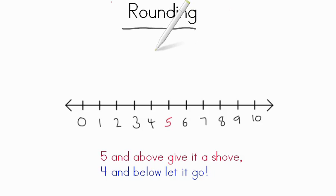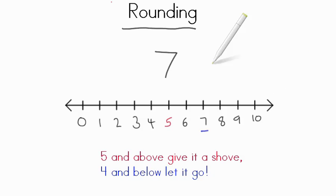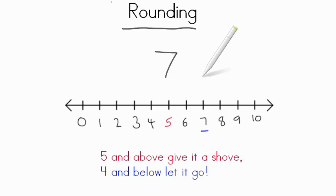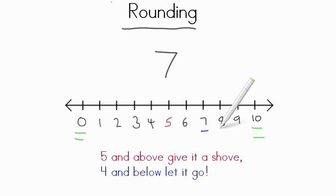For instance, if we have the number 7. If we use our number line here, we have the number 7 directly right here. We need to figure out just kind of how close it is to the nearest 10. So if you look down here, we have 0 and we have 10 — those are our nearest 10s.